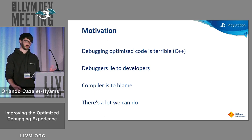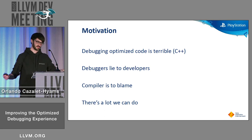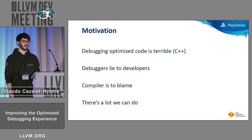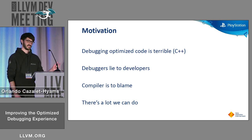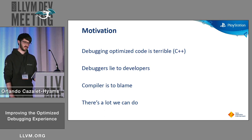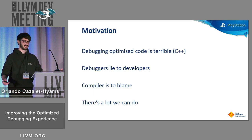Our users complain about it, people complain about it on social media, and we had an optimized debug info round table with people turning up, so that was good. We can't just blame the optimizer for rewriting the program, and we can't just say the standard template library relies too heavily on inlining, because we know that there are bugs in the compiler that cause the debugger to lie to the developer. And it turns out there's quite a lot of low-hanging fruit in this area.